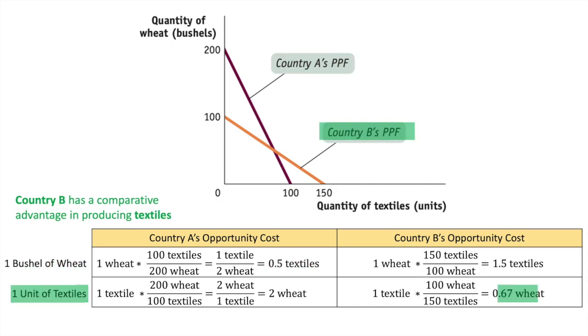However, for producing textiles, country B has a better competitive advantage than country A in production, since its opportunity cost of wheat is less than country A's.